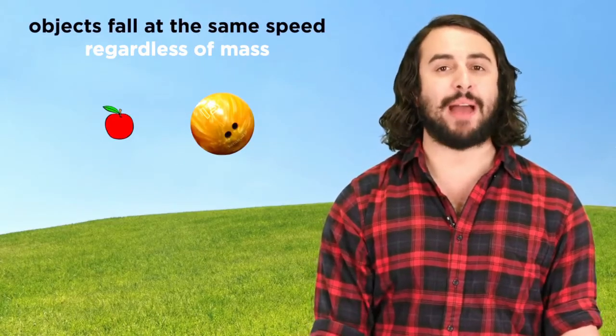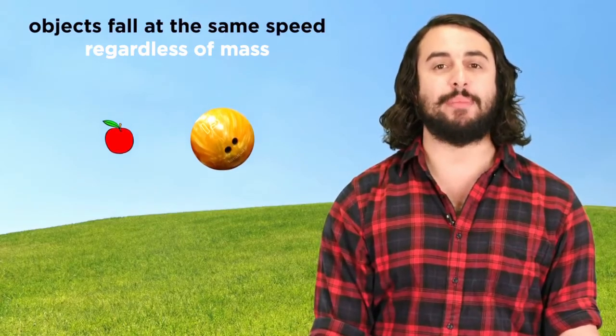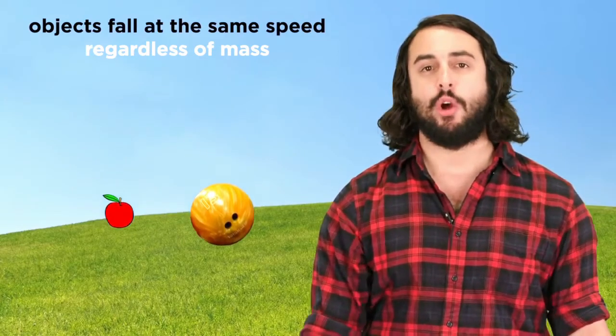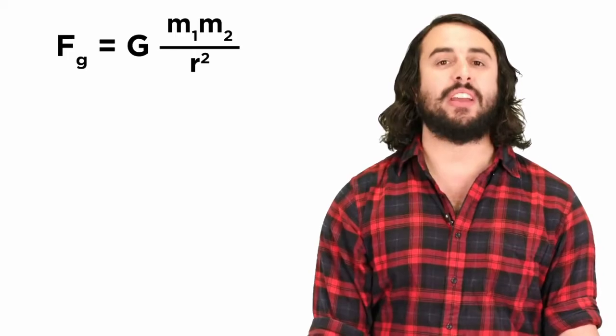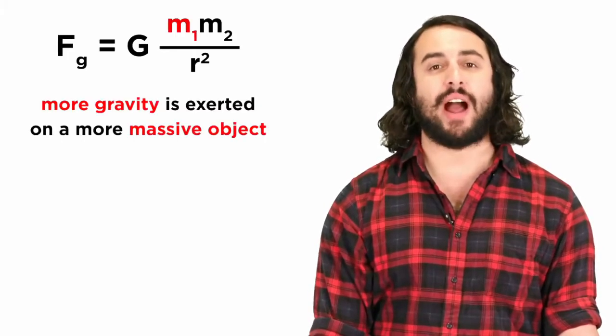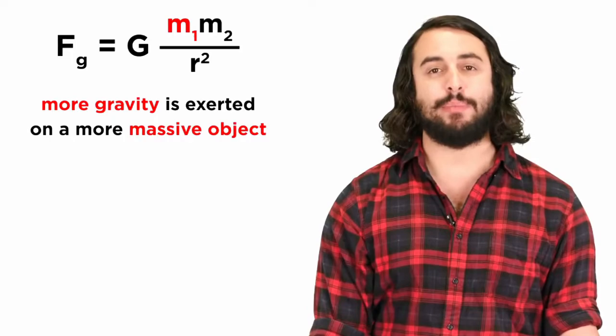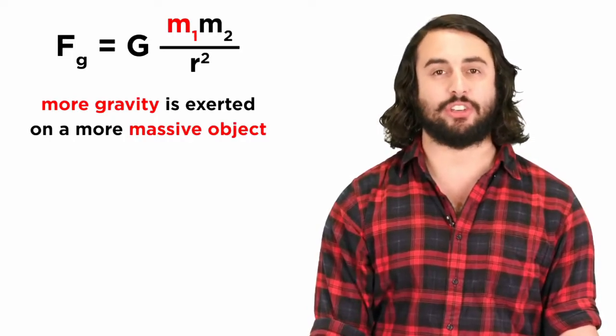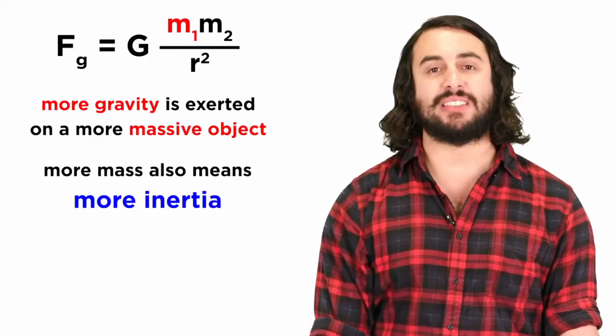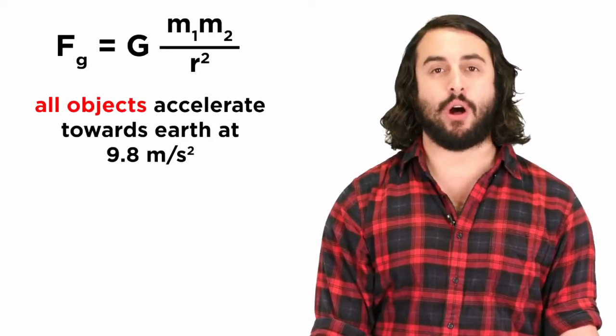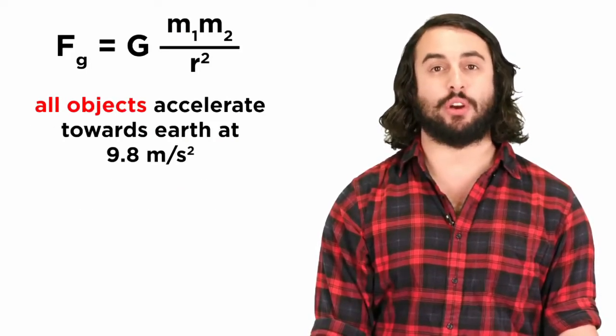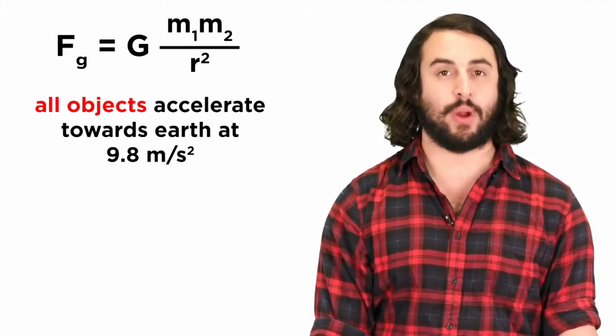Furthermore, we want to understand that an apple will fall to the earth with the same acceleration as a bowling ball or any other massive object if we disregard wind resistance. Although counterintuitive to some, we can rationalize this if we understand that while the force of gravity is able to impart greater acceleration on a more massive object, the more massive object also has greater inertia, or resistance to being accelerated, so the end result is that all objects accelerate towards earth in the same way, at 9.8 meters per second squared.